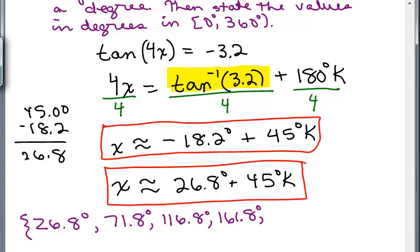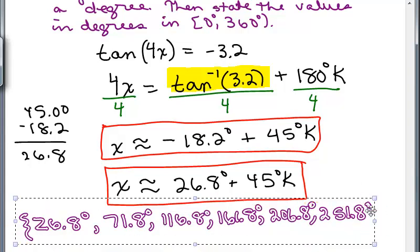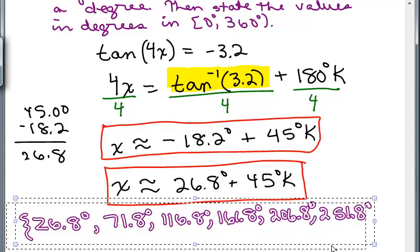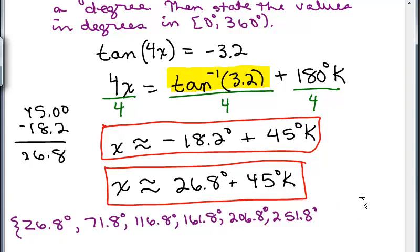So we're at 206.8 degrees. I'm doing this in real time. I'm adding 45 in my calculator over and over. 251.8 degrees. And I think what happens if I add 45 again? Oh, running out of space. Let's see, make this a little bit smaller so I can get all the values in on one line.